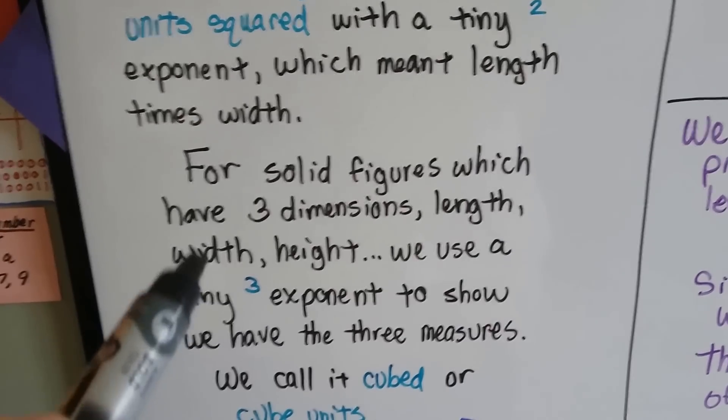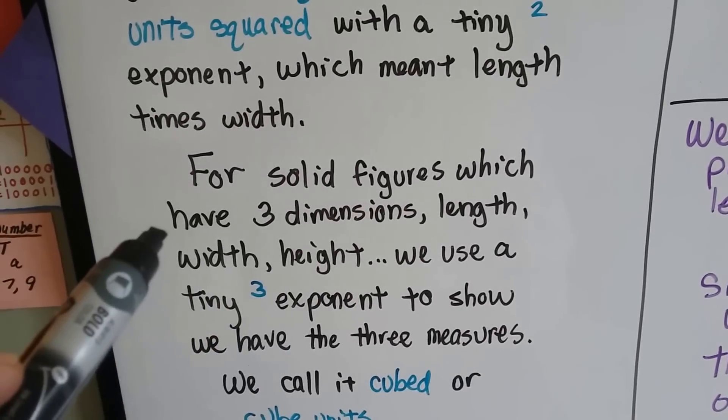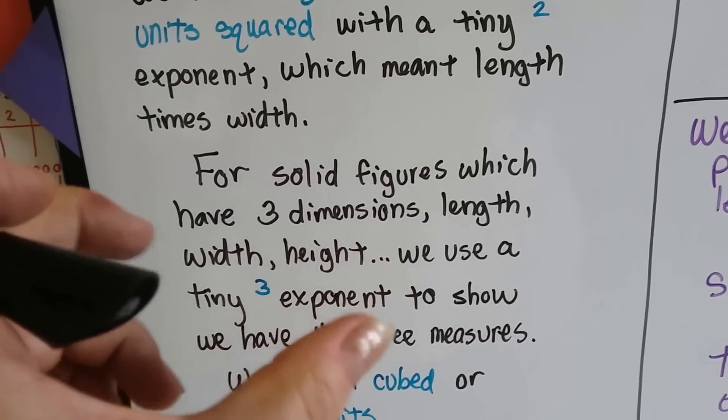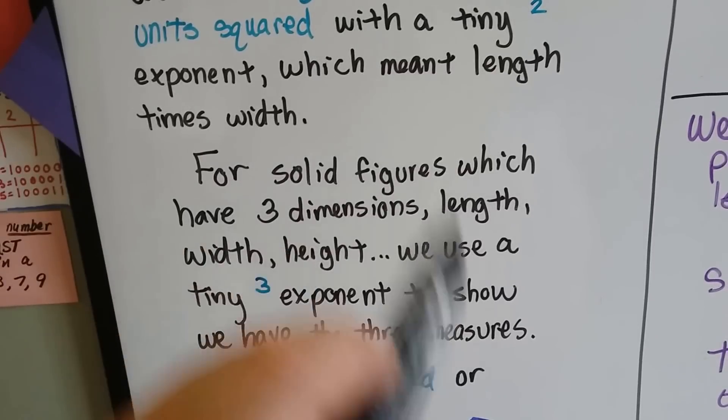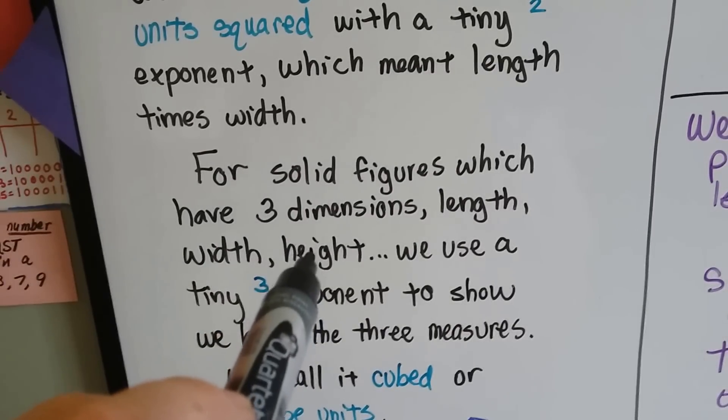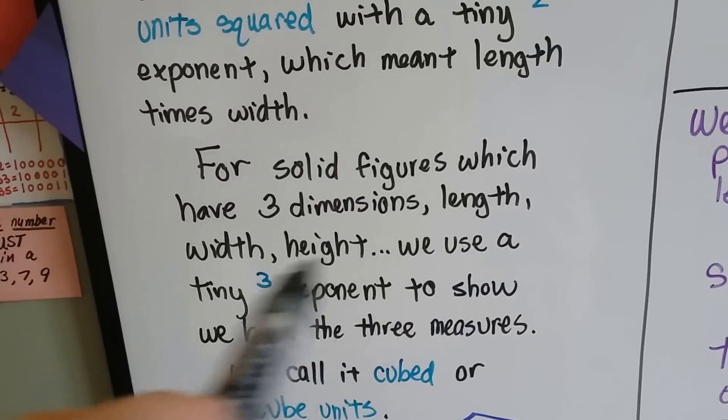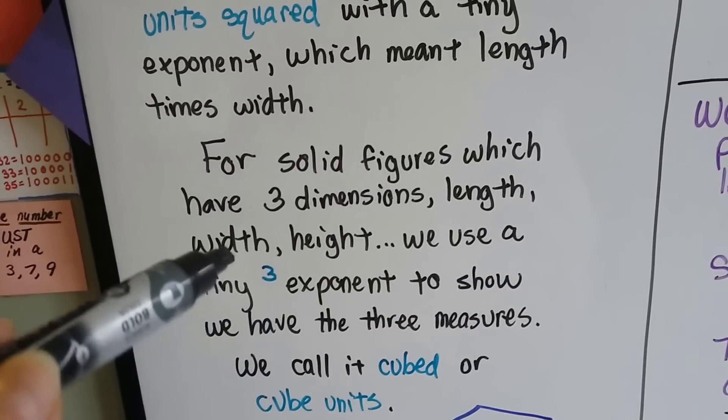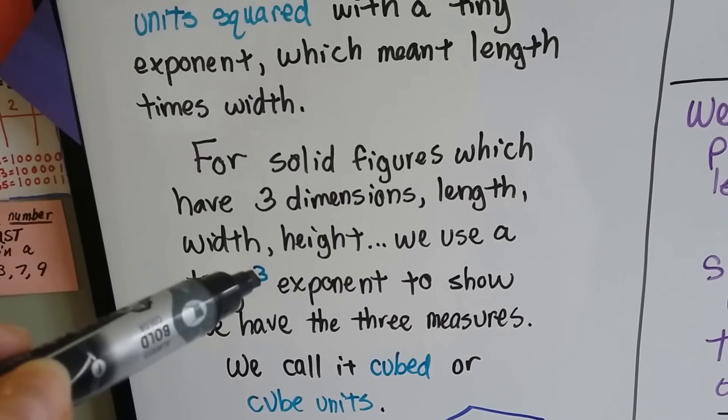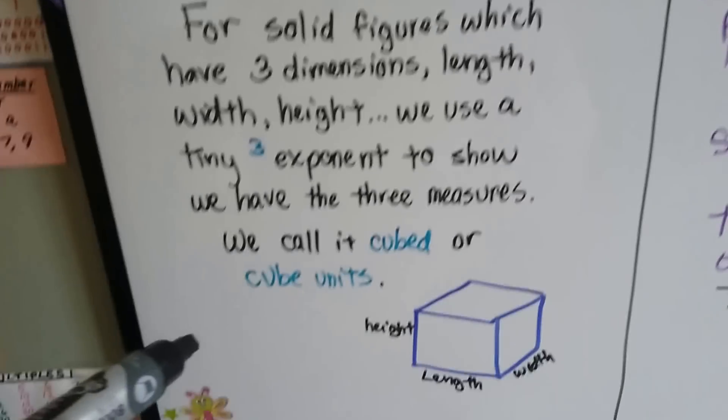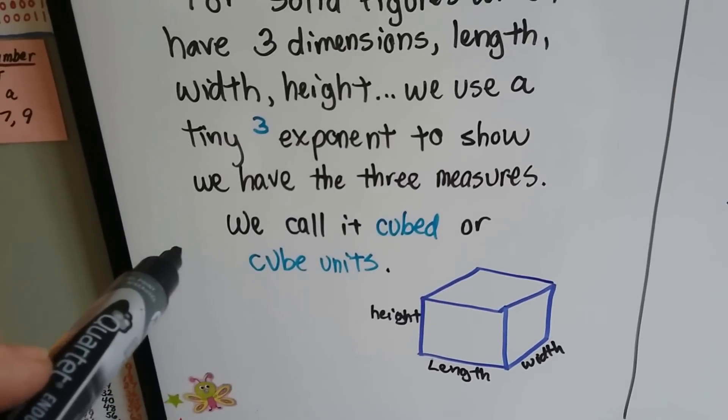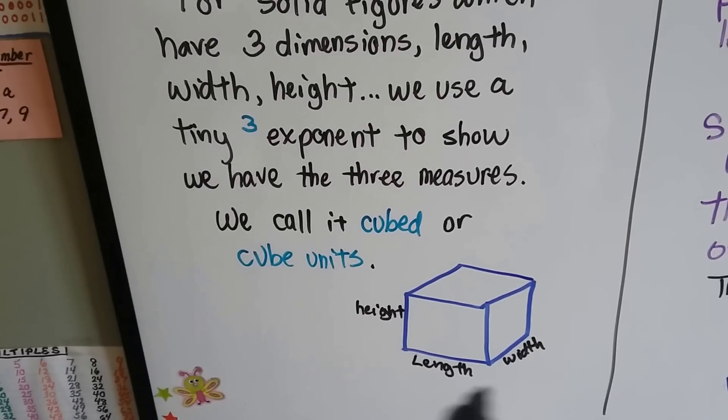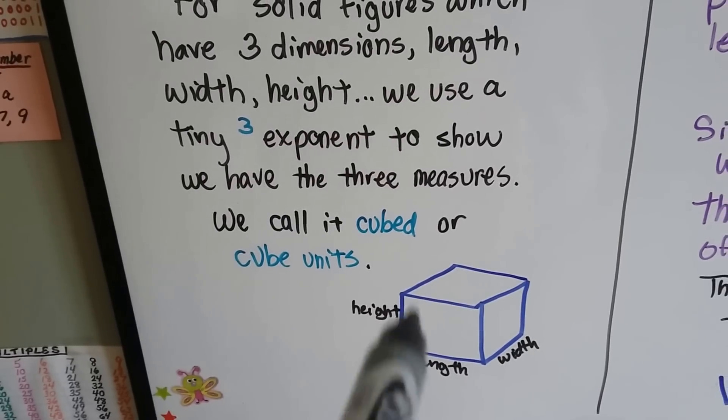For solid figures which have three dimensions—length, width, and height—we use a little tiny 3 exponent to represent those three measures. We call it cubed or cubic units. It's got length, width, and height. It's not flat like a piece of paper.